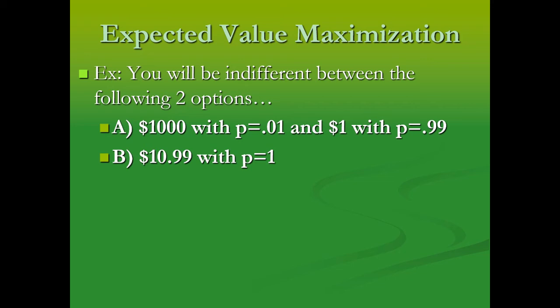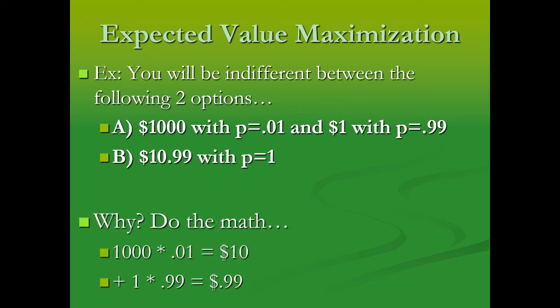And then we take $1, multiply it by a probability of 0.99, and that's worth $0.99 to us. So what we end up with is a situation where option A is worth